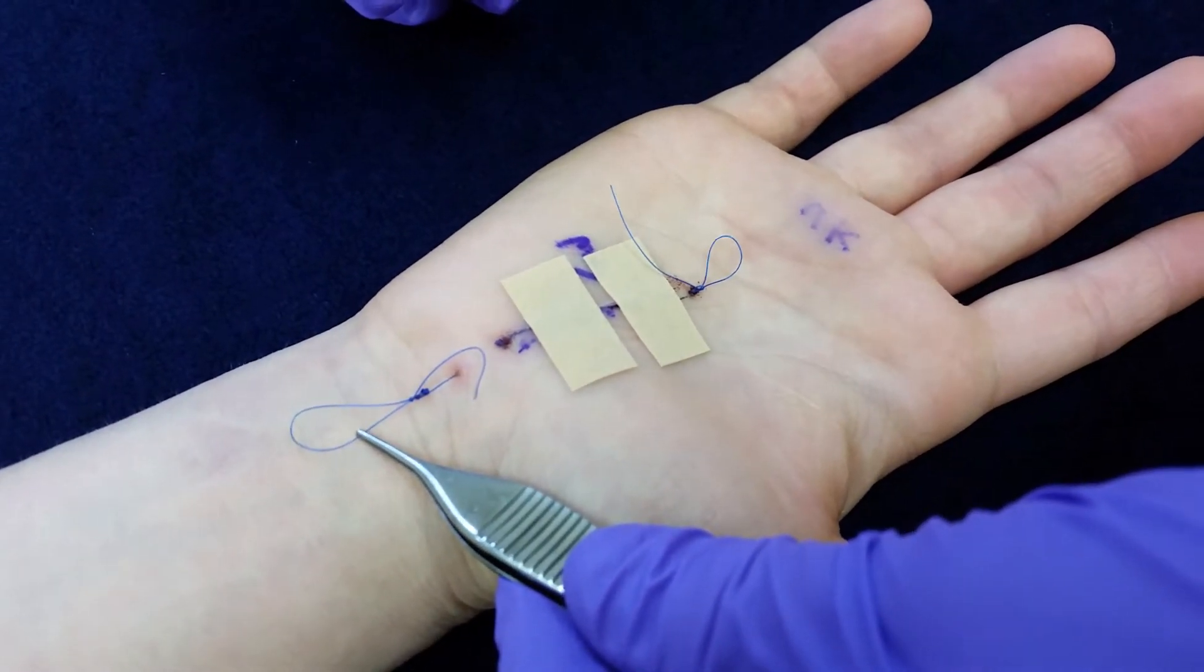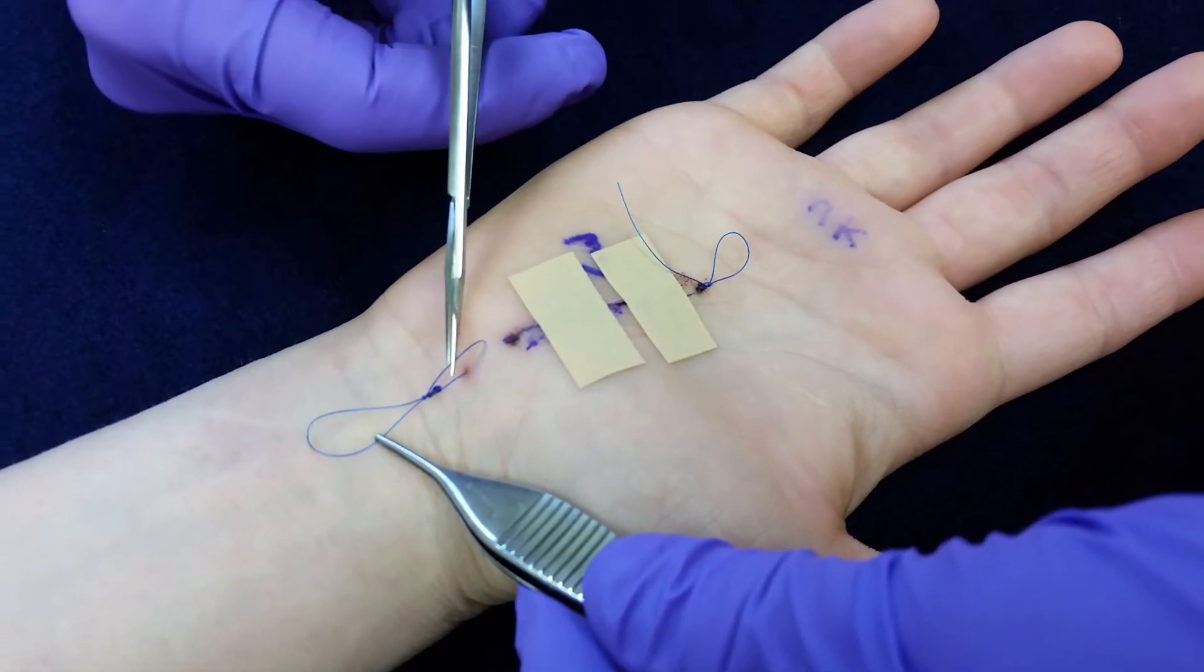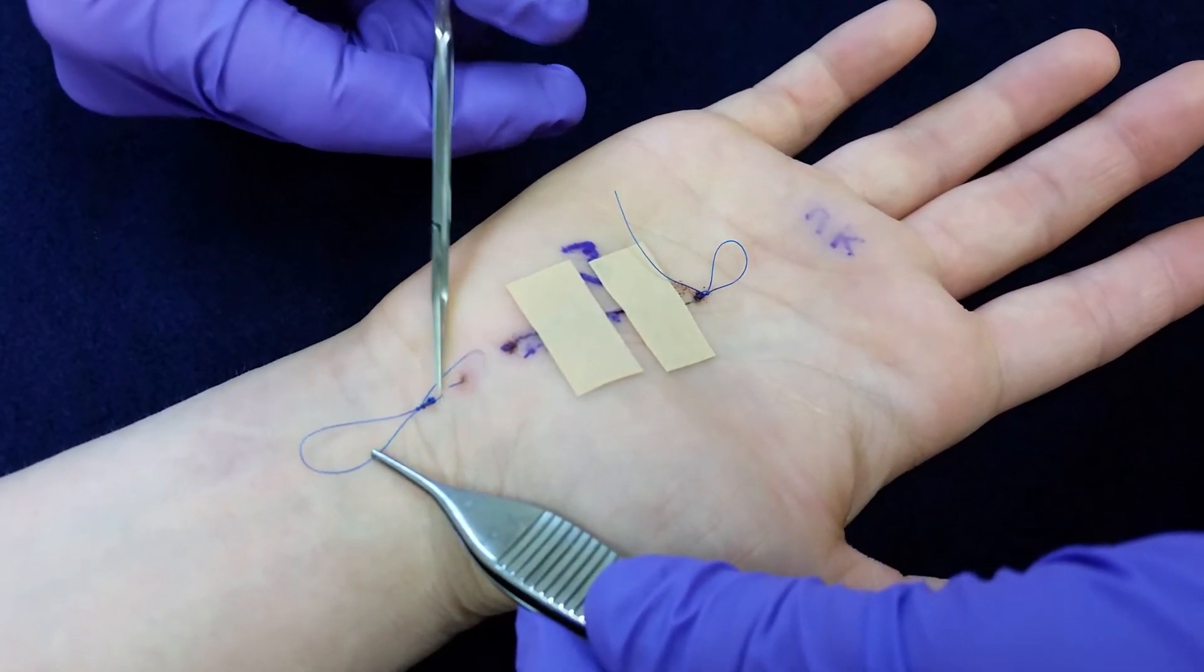And what you can see there is beneath the knot you can see a little string, and we're going to go ahead and snip that string. Perfect.